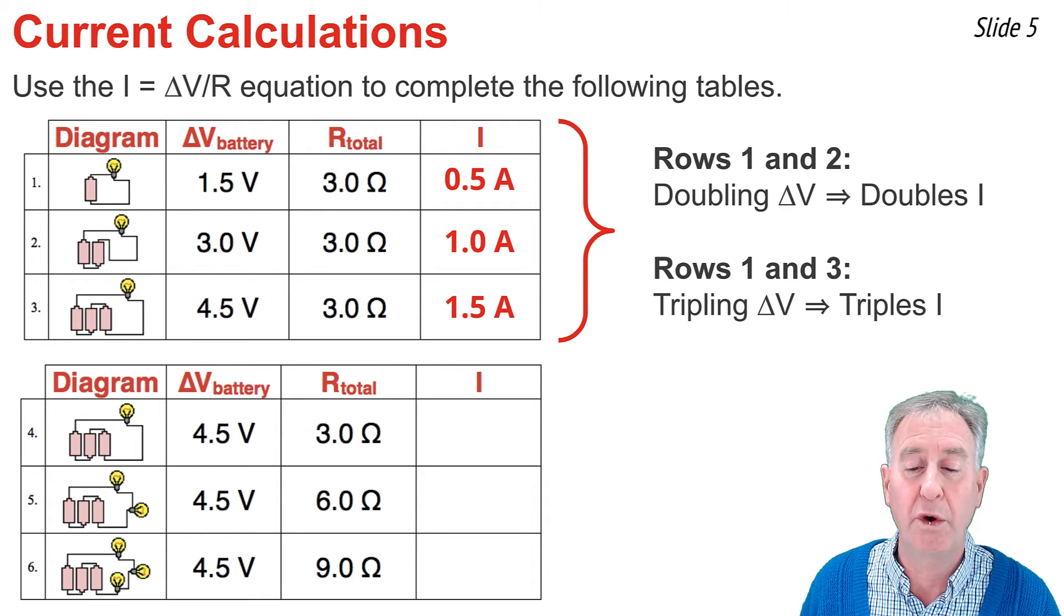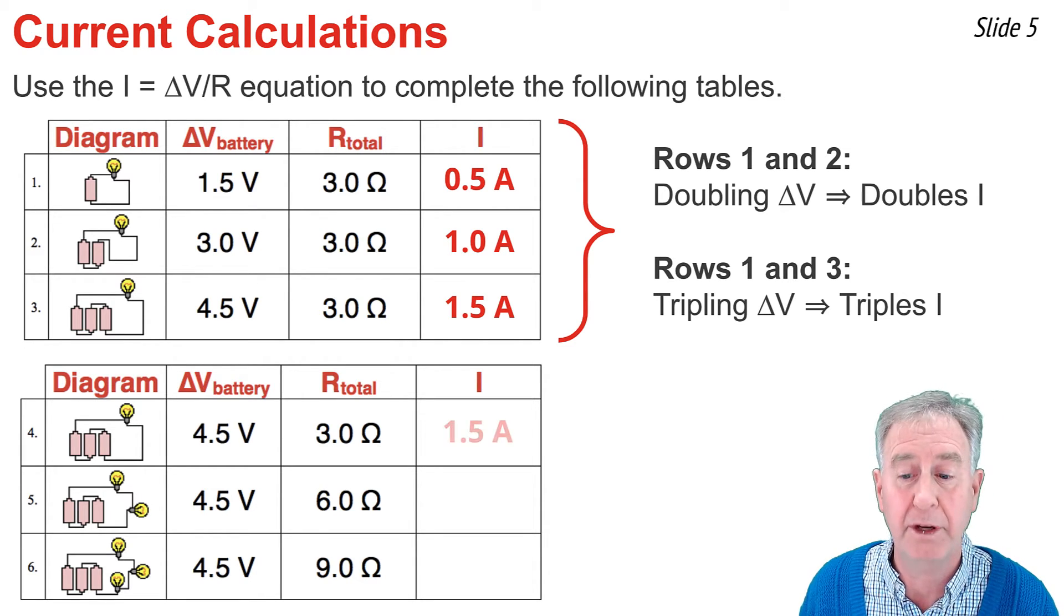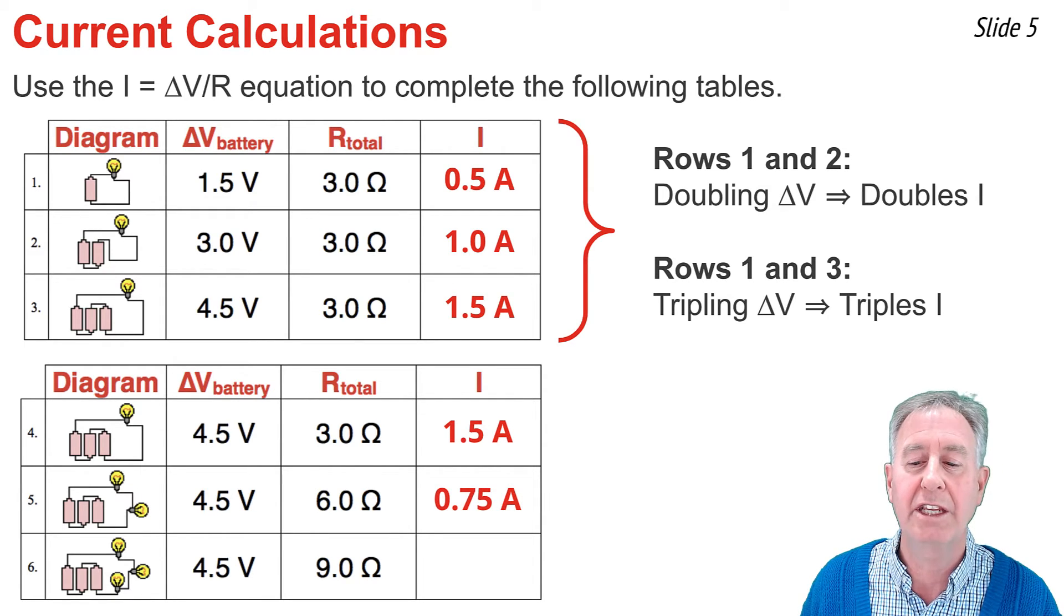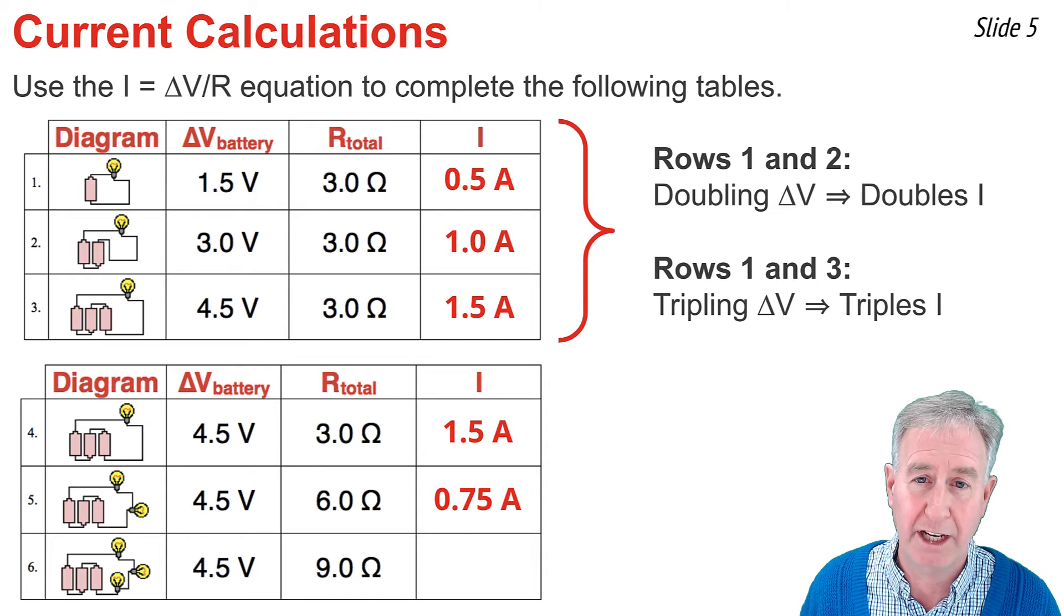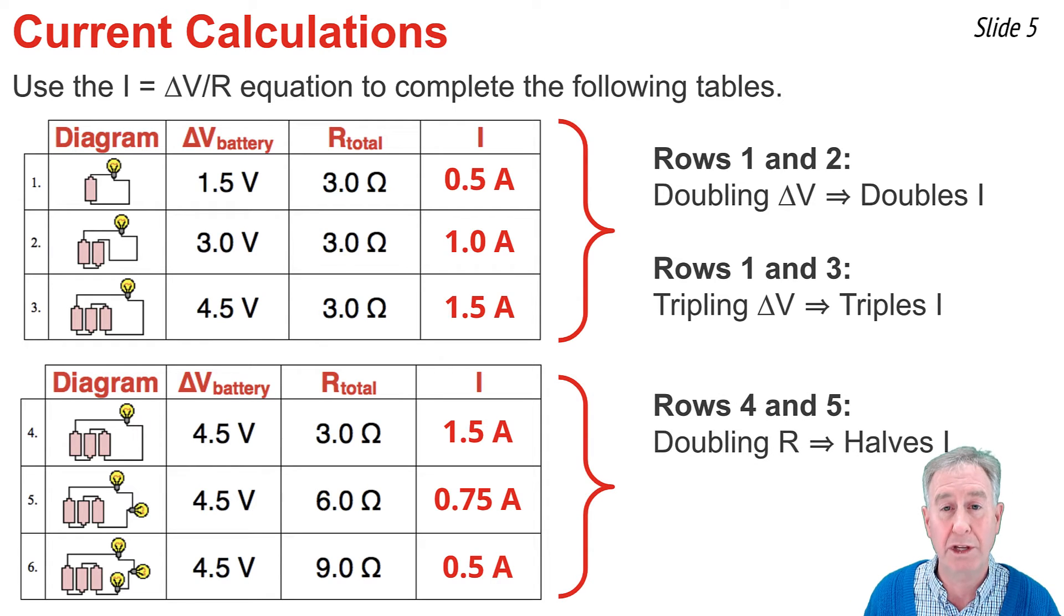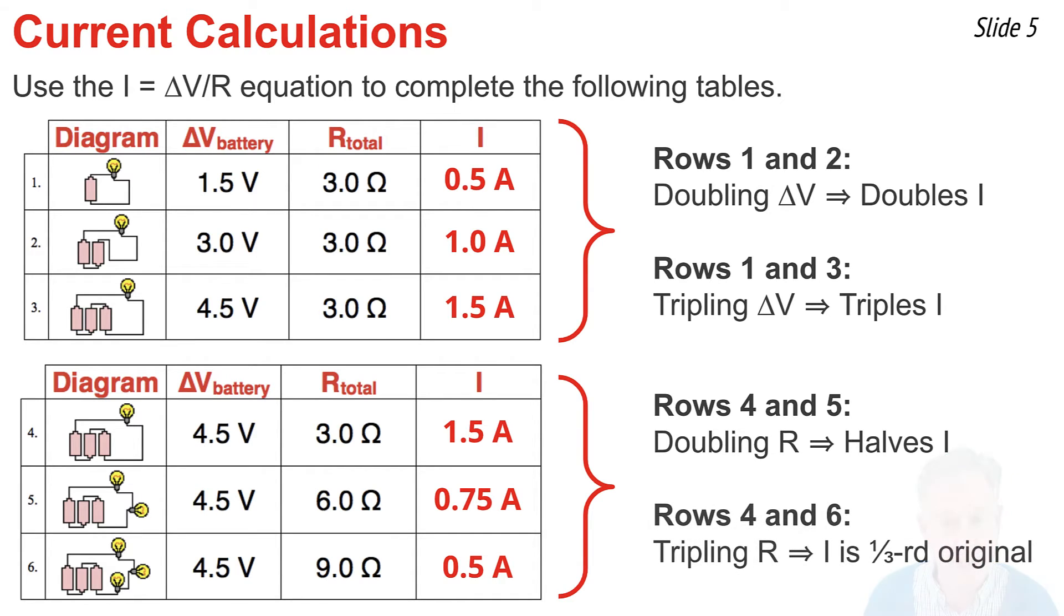When I calculate I in row 4, I go 4.5 divided by 3, and I get 1.5 amps. In the next row, it's 4.5 divided by 6. And in the last row, it's 4.5 divided by 9. Now let's look at the pattern. If I look at rows 4 and 5, I notice the resistance has doubled from 3 ohms to 6 ohms. What happened to the current? The current was halved from 1.5 amps to 0.75 amps. We say that current and resistance are inversely proportional.